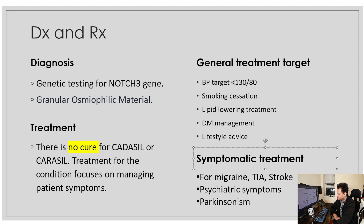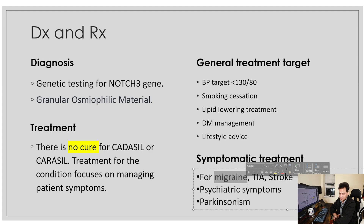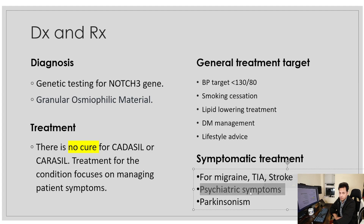For symptomatic treatment: migraine can be managed with amitriptyline, propranolol, and other migraine prophylaxis drugs; TIA and stroke with blood thinners; psychiatric symptoms with mood stabilizers; and parkinsonism with levodopa-carbidopa and other anti-parkinsonian drugs. This concludes my presentation on CADASIL — please feel free to ask questions in the comments.